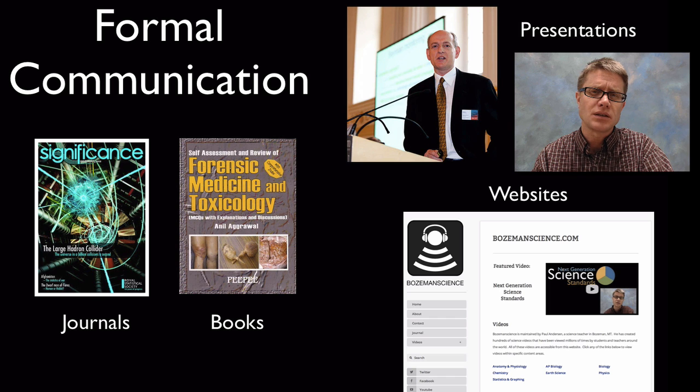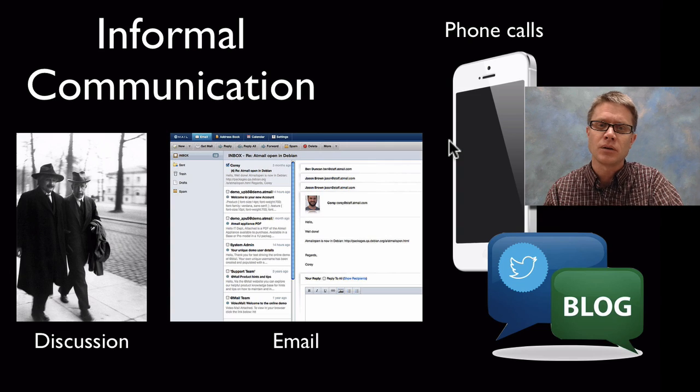That communication can take several forms. It can be in the form of scientific journals or books that they publish. They can attend symposiums and present their data to other scientists so they can receive information back. They can use websites to publish their results and share that with the rest of the world. Formal communication is actually publishing something that you want to have your peers review and look at.